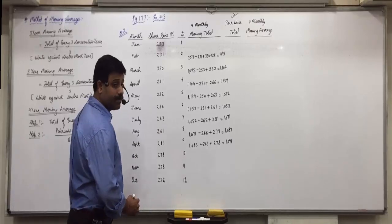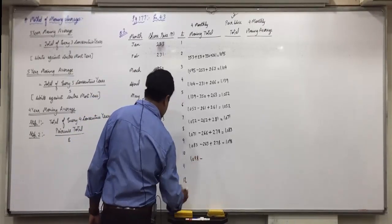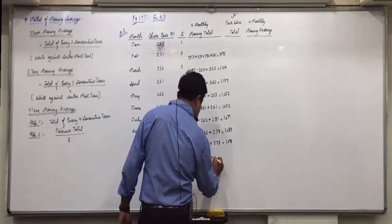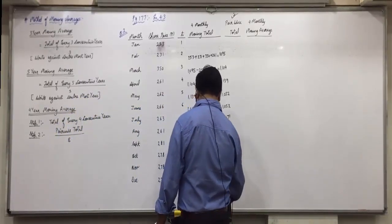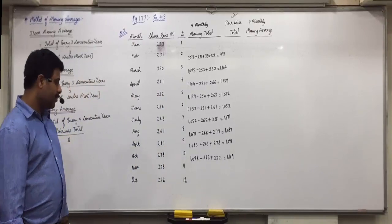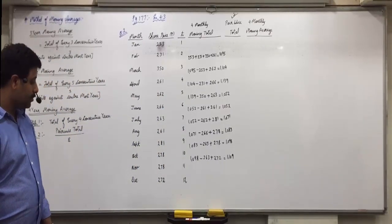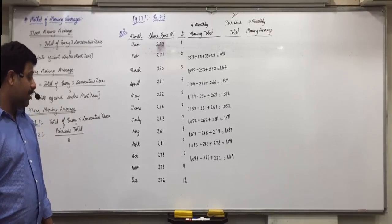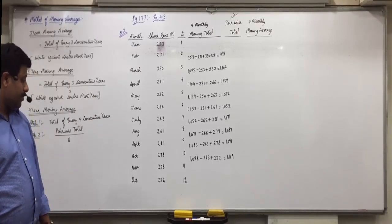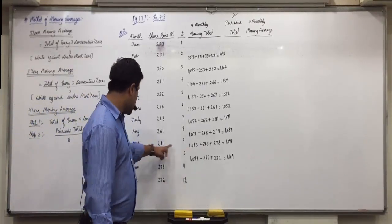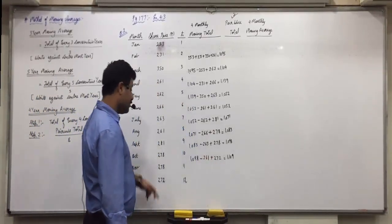Next: 1098 minus 261 after 263, and we add 270 as the last value, giving 1109. After 263 we minus 261, and 1109 is our last 4-monthly moving total.